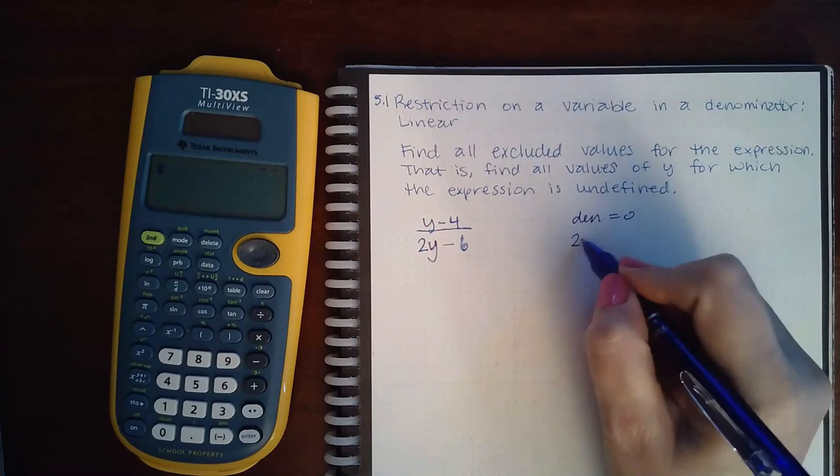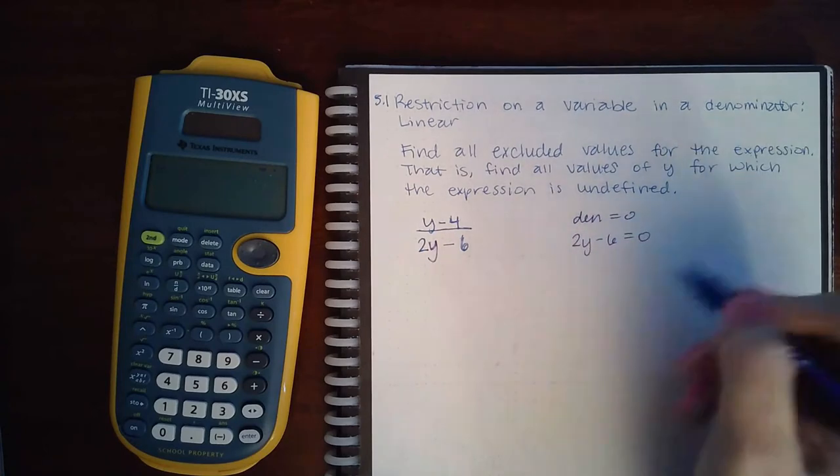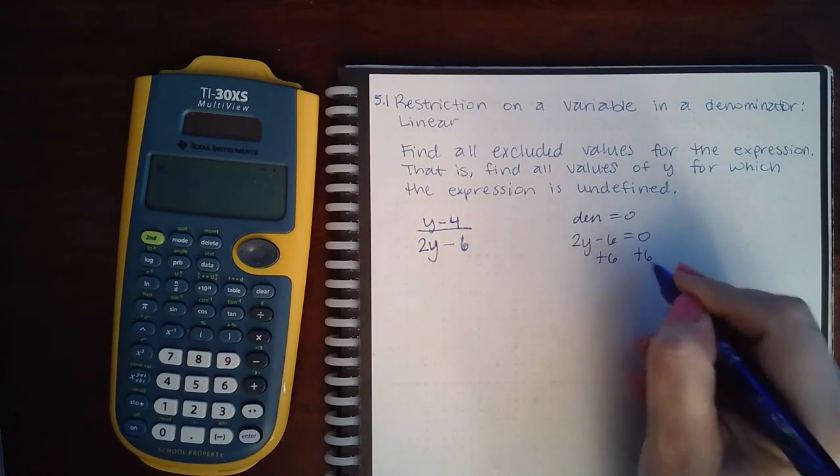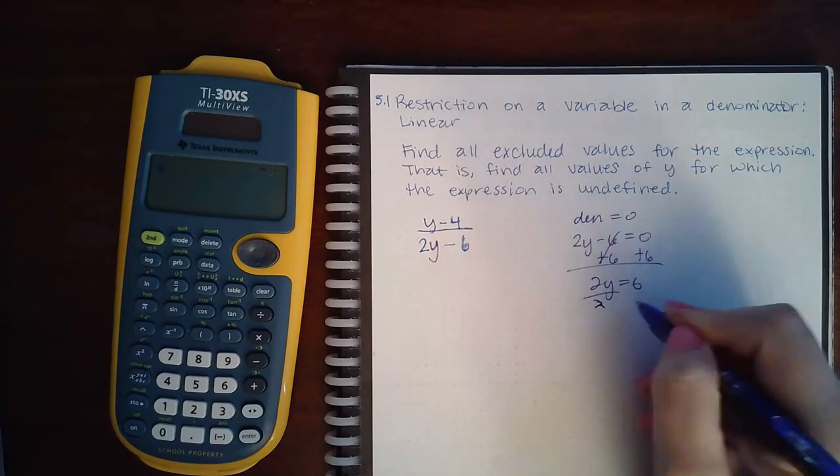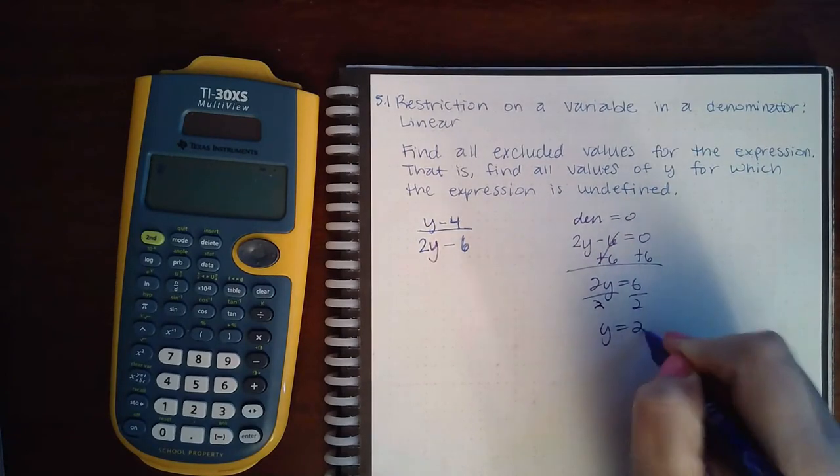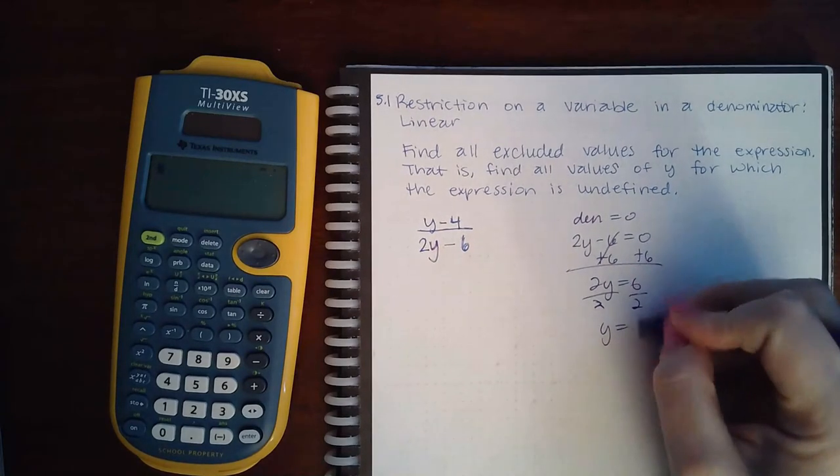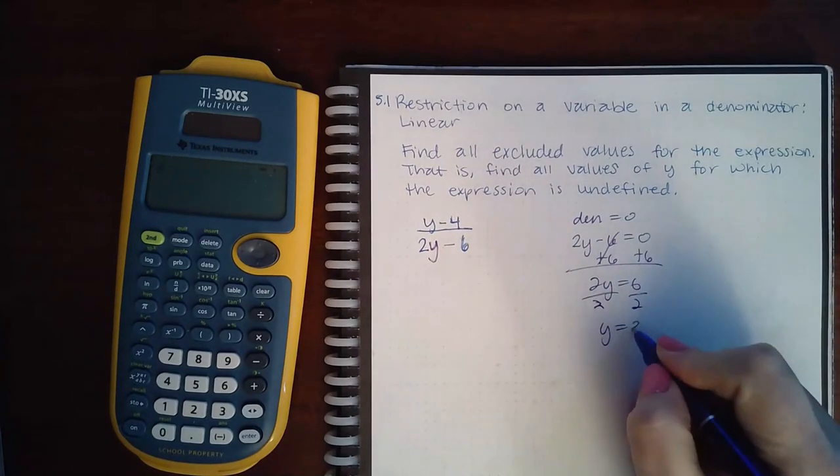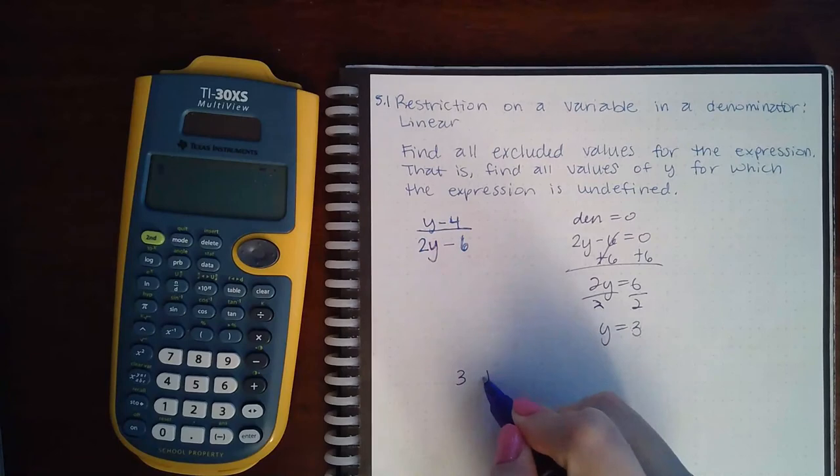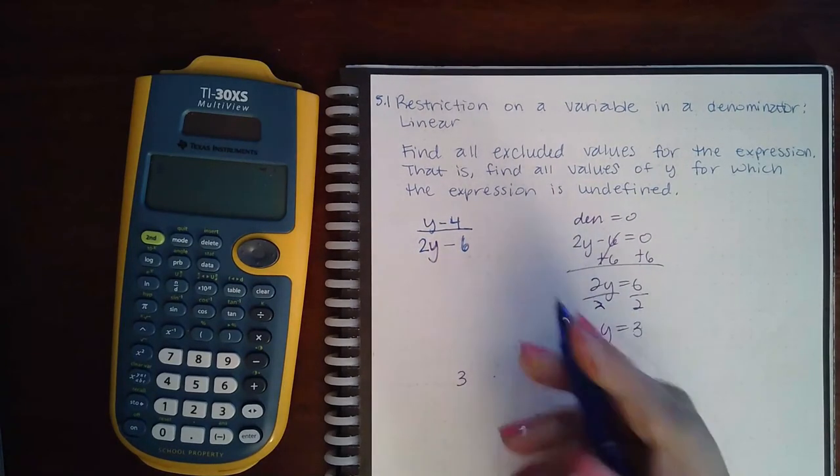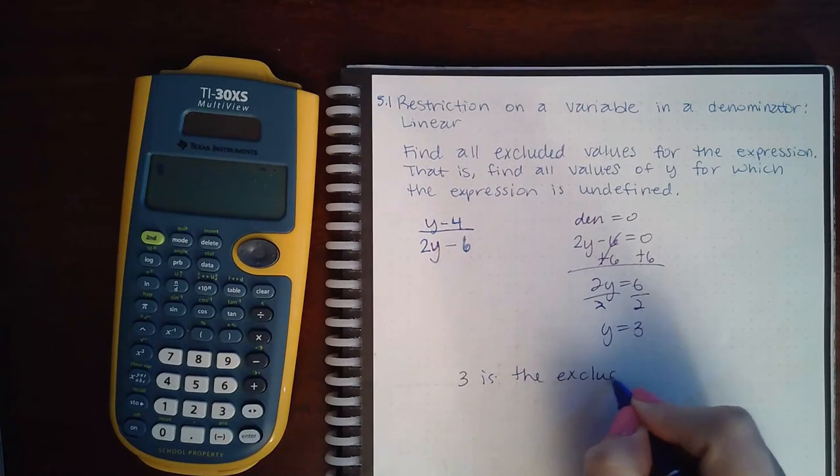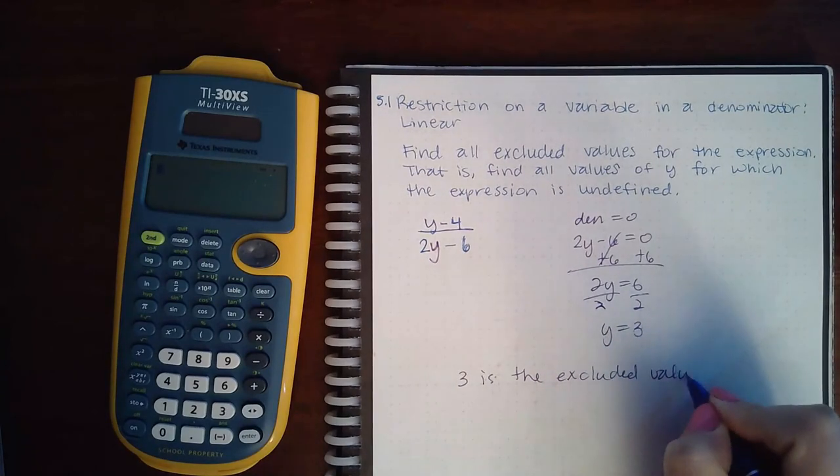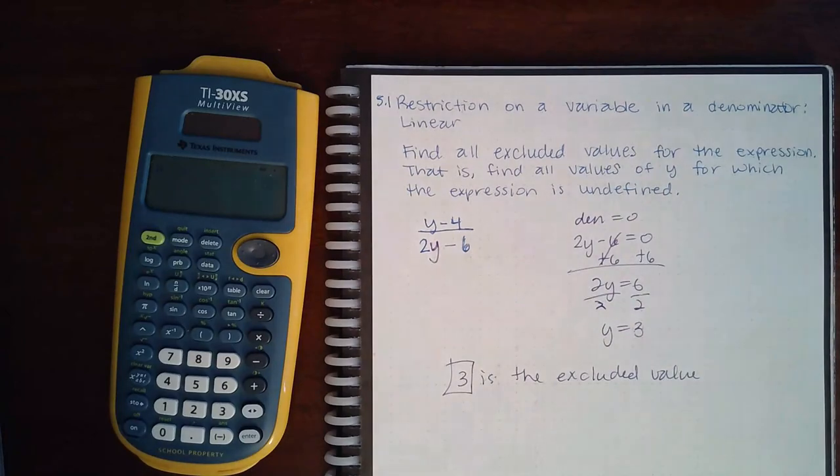So when 2y minus 6 equals 0, and if we solve that equation, I get when y equals—I'm sorry—when y equals 3. So 3 is the excluded value, and this is our answer.